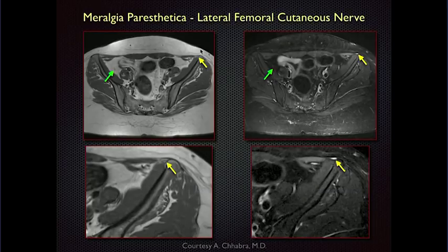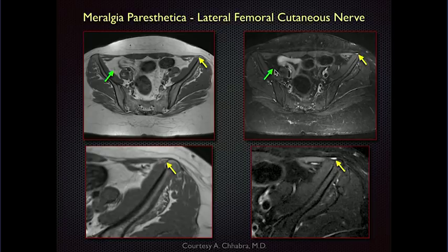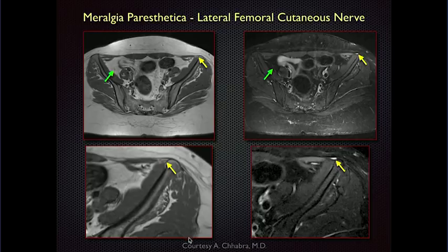Here's an example of an abnormal nerve but very subtle. On the right side there's a little tiny nerve with barely perceptible signal intensity — you'd barely notice it. On the left side, right adjacent to the anterior aspect of the iliac crest, there's a really bright focus. That's a lateral femoral cutaneous nerve that's hyperintense because it's irritated. This is an example from colleague Avnish Chhabra showing meralgia paresthetica. You would really need to know that clinical information and know where to look to even see this abnormality — otherwise you're likely to gloss over it entirely.